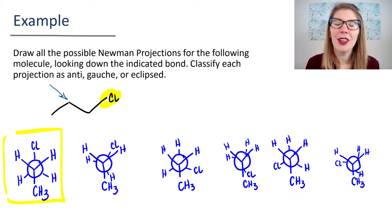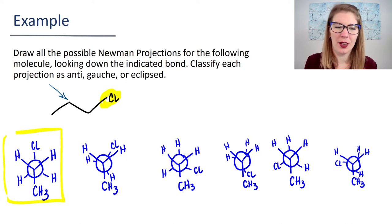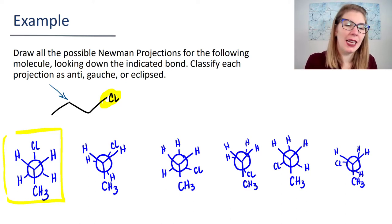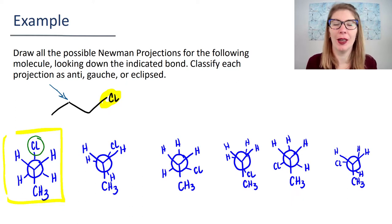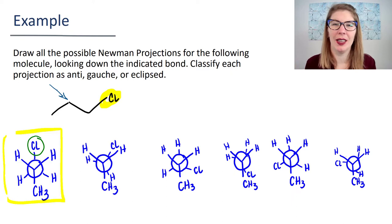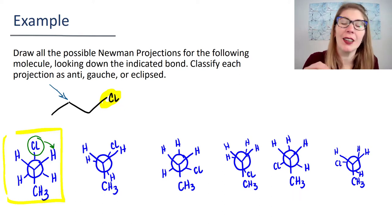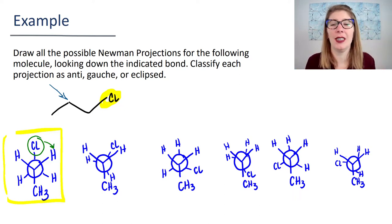Whatever you did, just make sure that you're keeping either the front carbon or the back carbon steady and rotating the other one. For me, I like to be consistent—I like to pick the back carbon and rotate the main group on it. So the chlorine is the big group, and I just pick a direction and rotate 60 degrees each time. That makes me feel like I'm not going to miss anything.